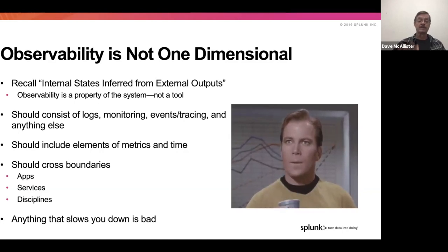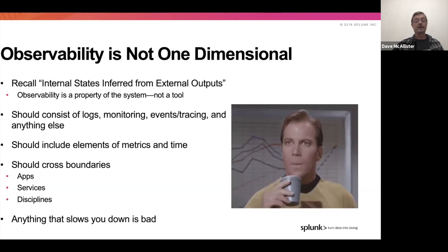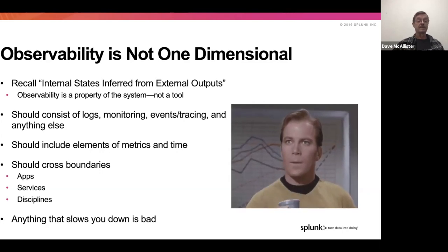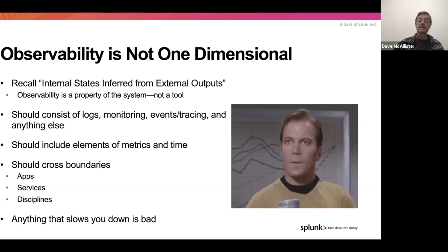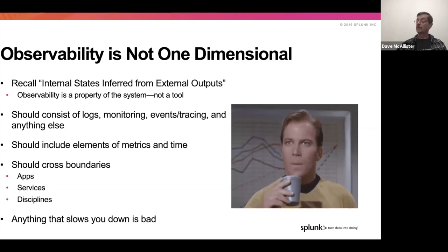For instance, there's a customer I know who actually brings in data from their Twitter feed. They know that things going wrong will cause customers to start asking questions on Twitter long before any of their current environmental monitors trigger. So they monitor across this, looking for certain keywords and raising alert structures across that environment. Observability also includes elements of both metrics and time. It crosses boundaries between applications, services, and disciplines — from IT ops into dev and into business aspects. Anything that slows you down is bad, because timing and response become increasingly important.